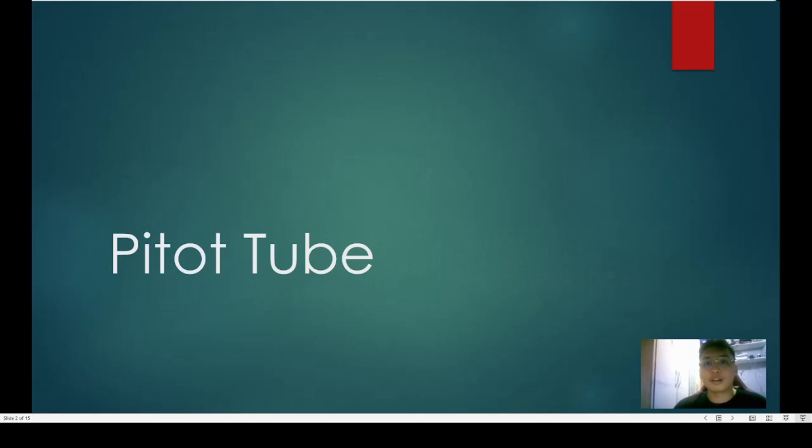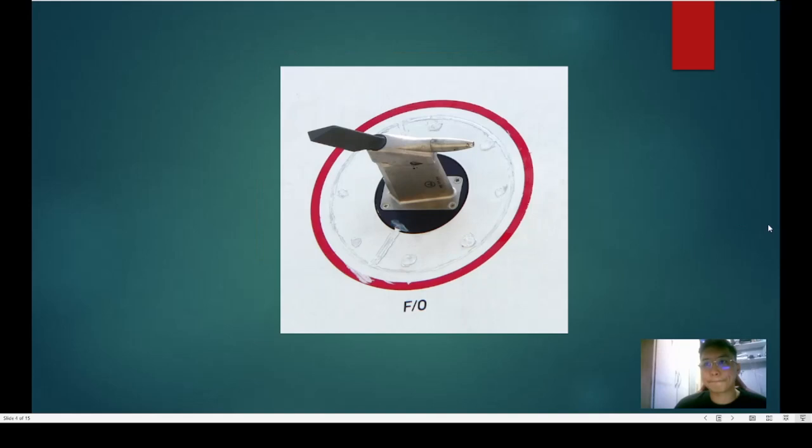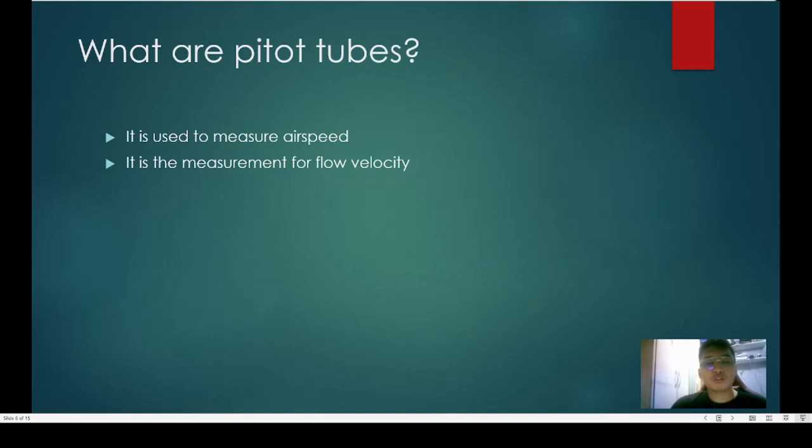So, pitot tube. If any of you have seen an actual aircraft, you may or may have not noticed the long pole at the side of the aircraft. That is called the pitot tube. Pitot tubes are used to measure airspeed and when discussing the basic concept of the pitot tube, we will be able to determine the expression of velocity of flow in any point in the pipe.